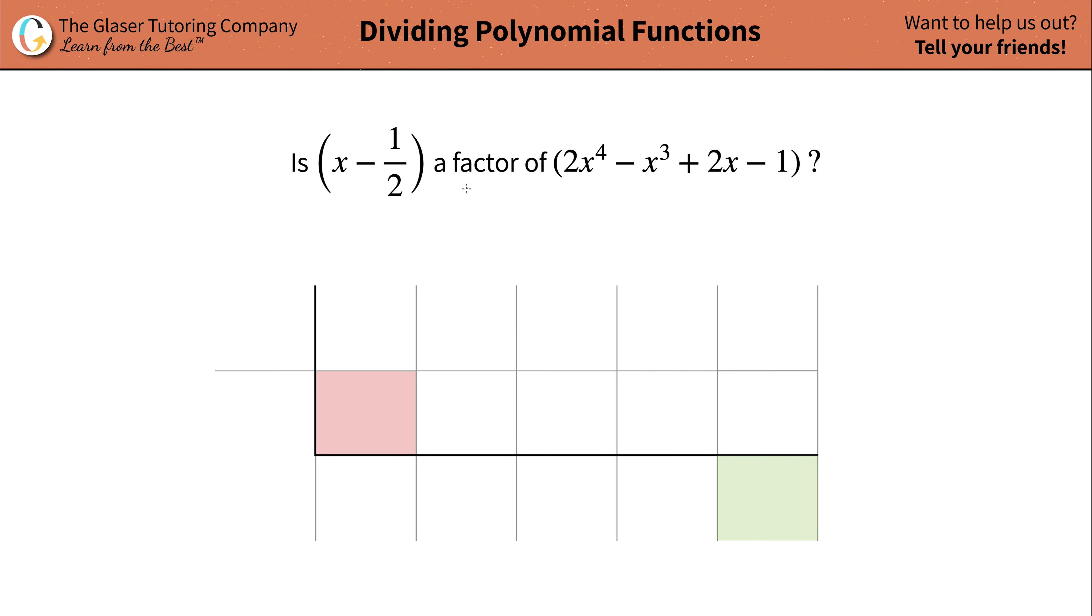In order to do that, we first have to understand what it means to be a factor. Simply imagine you have a simple example of let's say eight, and I want to determine whether two is a factor of eight. So what I would do is take two divided into eight. And if the result is a nice whole number, meaning it's not a decimal with any type of remainder to it, then I can state definitively that this is indeed a factor of eight.